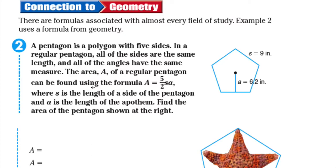The area A of a regular pentagon can be found by using the formula A equals five halves times s times a, where s is the length of a side of the pentagon and a is the length of the apothem. Find the area of the pentagon shown at the right.